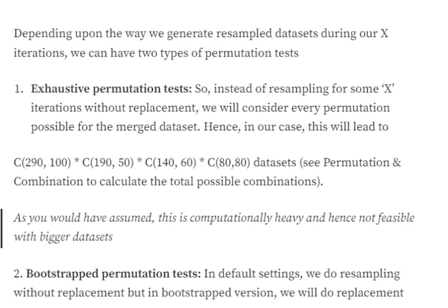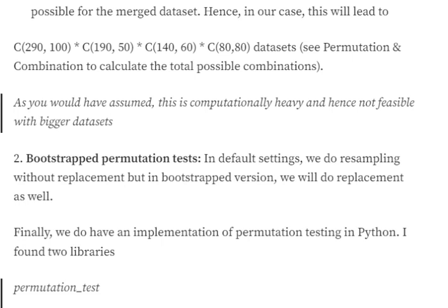Permutation testing can be of two types depending on how we create the resampled data set. In exhaustive permutation testing, we calculate each and every possible permutation — for 290 samples split into groups of 100, 50, 60, and 80, the total combinations are C(290,100) × C(190,50) × C(140,60) × C(80,80), which is an astronomically large number. This makes exhaustive permutation tests computationally very heavy and not feasible for big data sets. The second type — bootstrap permutation testing — resamples with replacement instead of without.